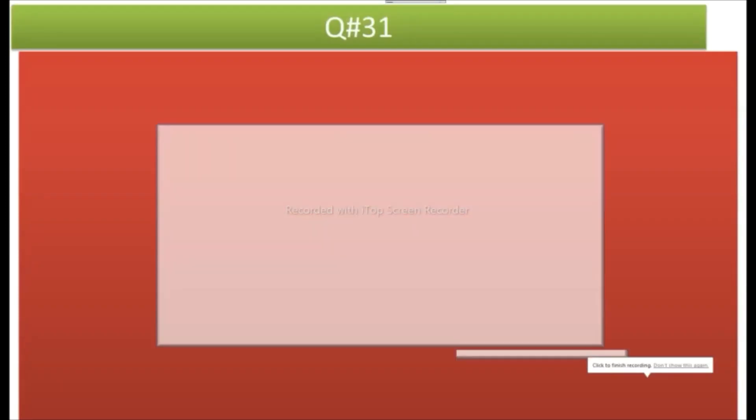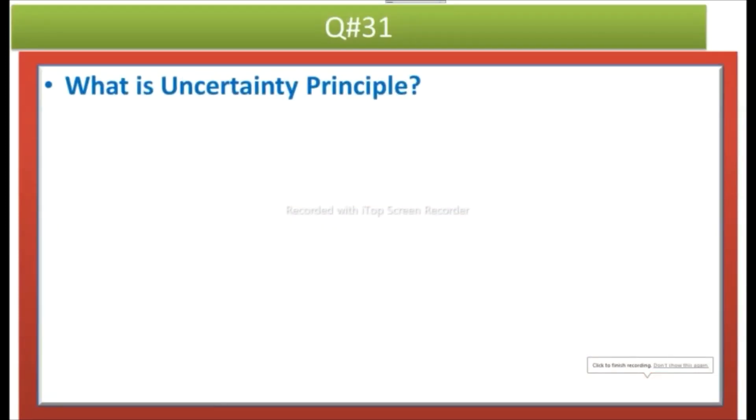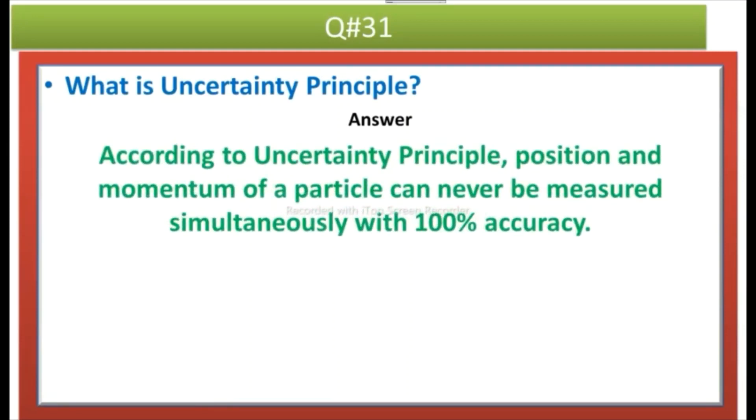Question No. 31 is What is Uncertainty Principle? Answer is According to Uncertainty Principle, position and momentum of a particle can never be measured simultaneously with 100% accuracy. This is called Uncertainty Principle.